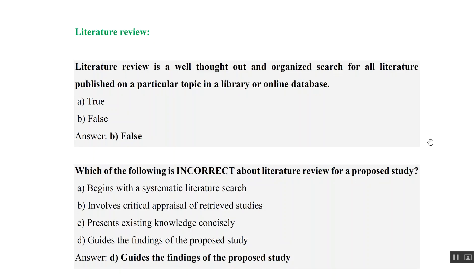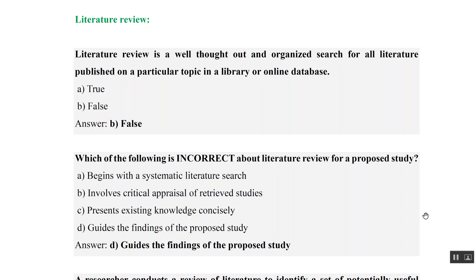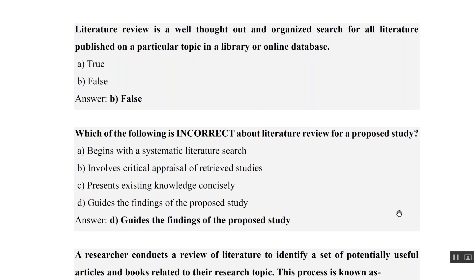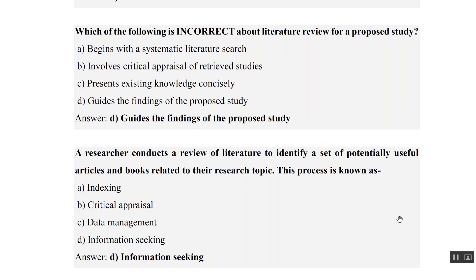Which of the following is incorrect about the literature review of a proposed study? It begins with a systematic literature search — true. It involves critical appraisal — true. It presents existing knowledge concisely — true. But it cannot guide the findings of a proposed study — correct, because for a proposed study you have to perform it and then come to know about its findings. Literature review just tells you what is known and what is not known, and helps you frame the research question and methodology.